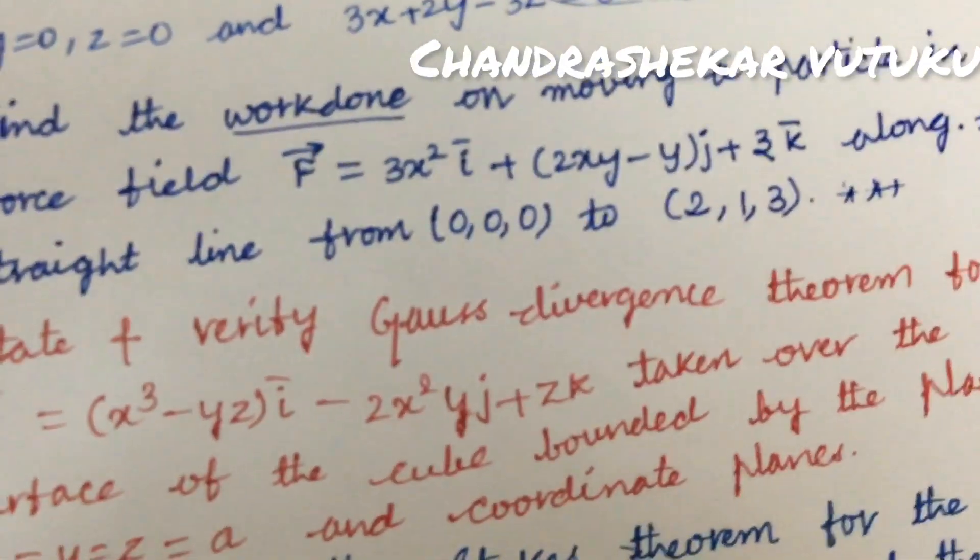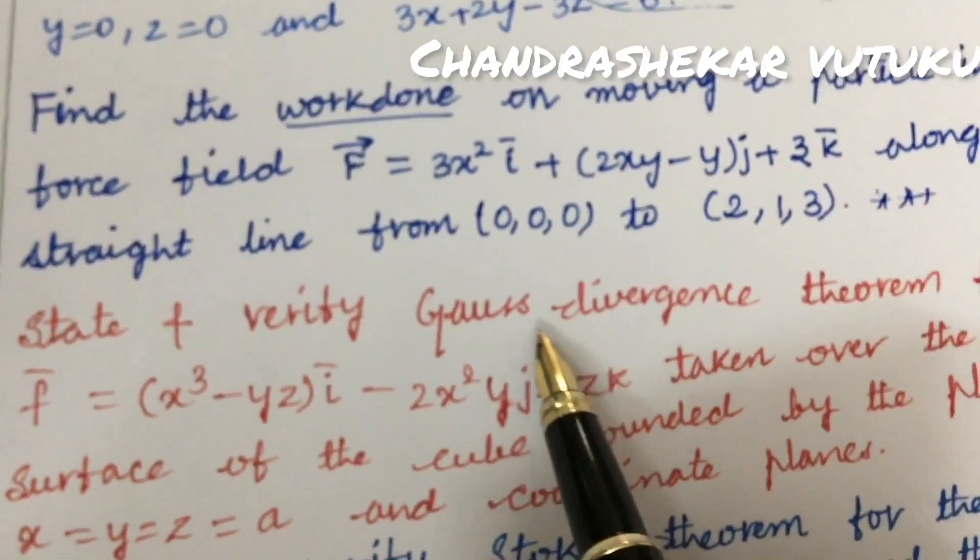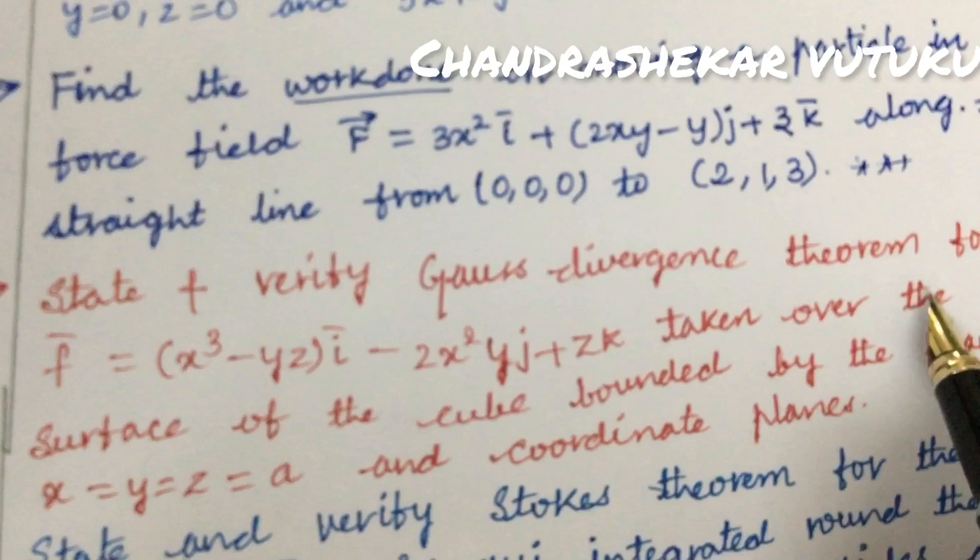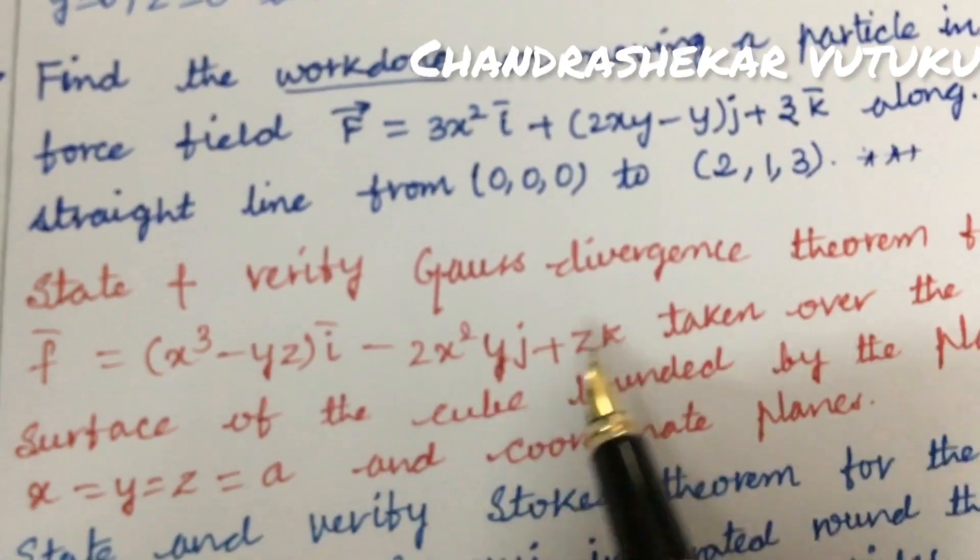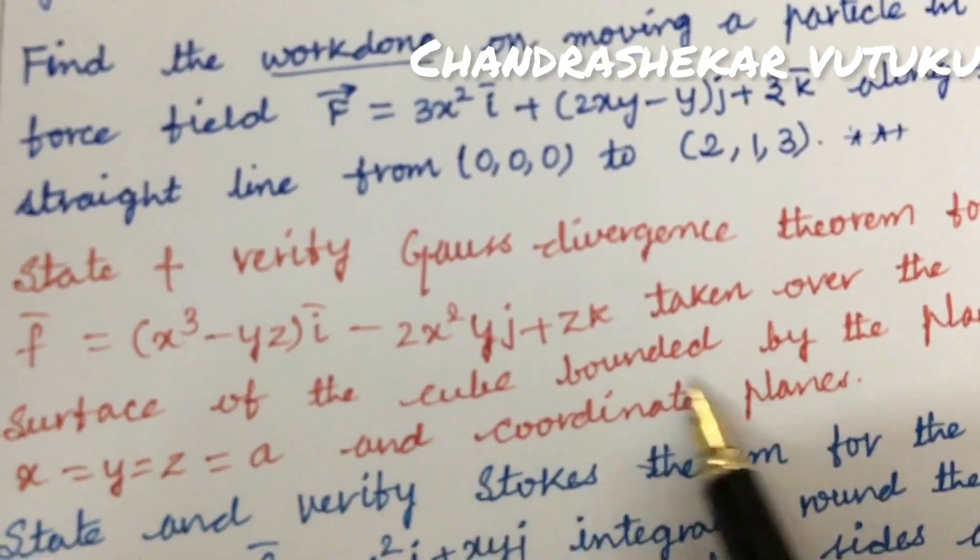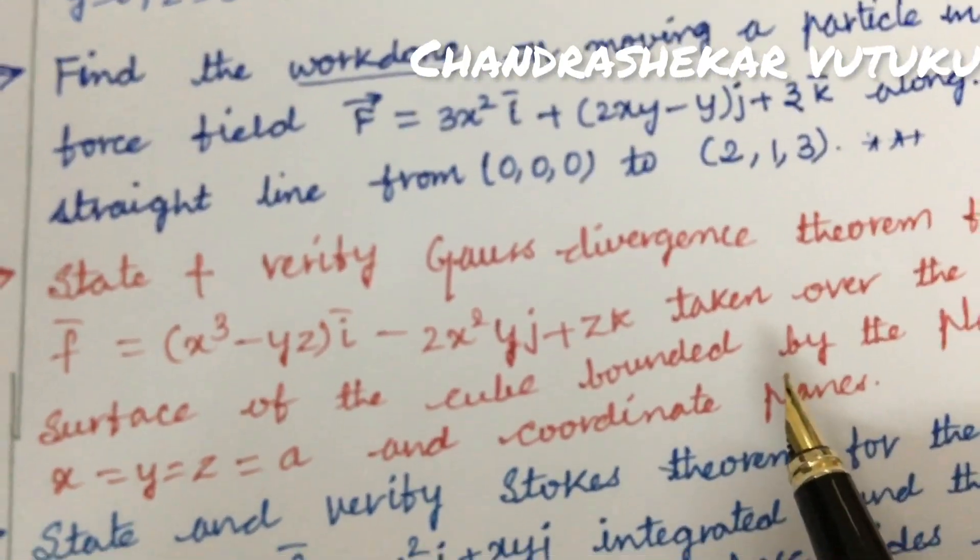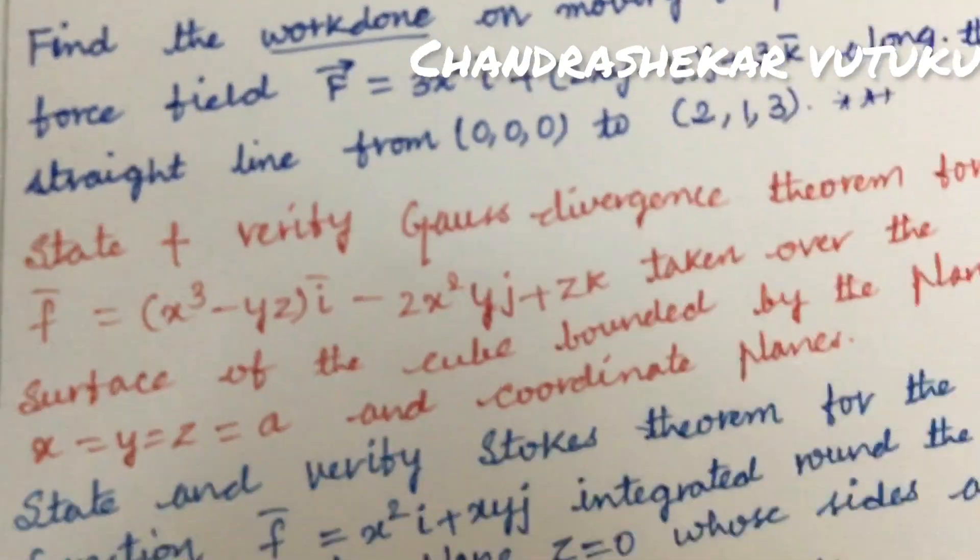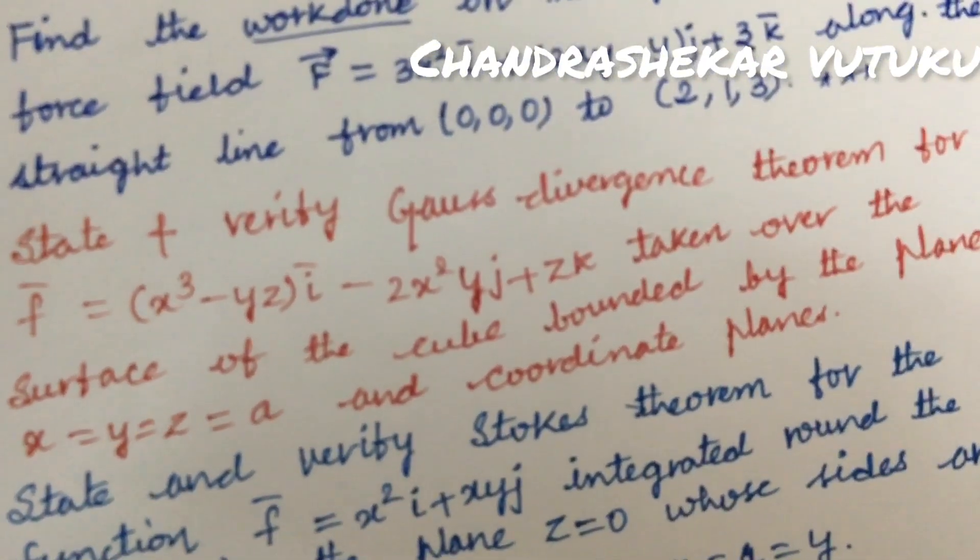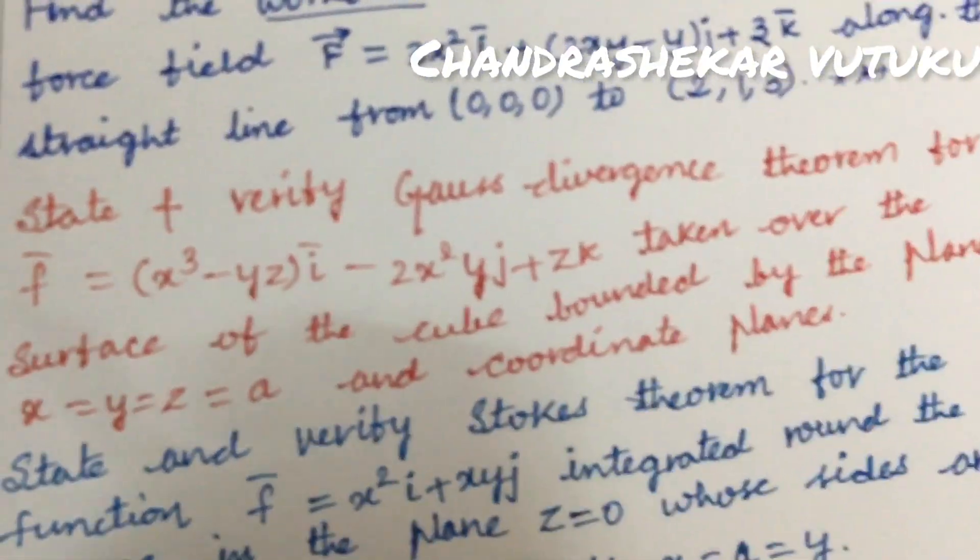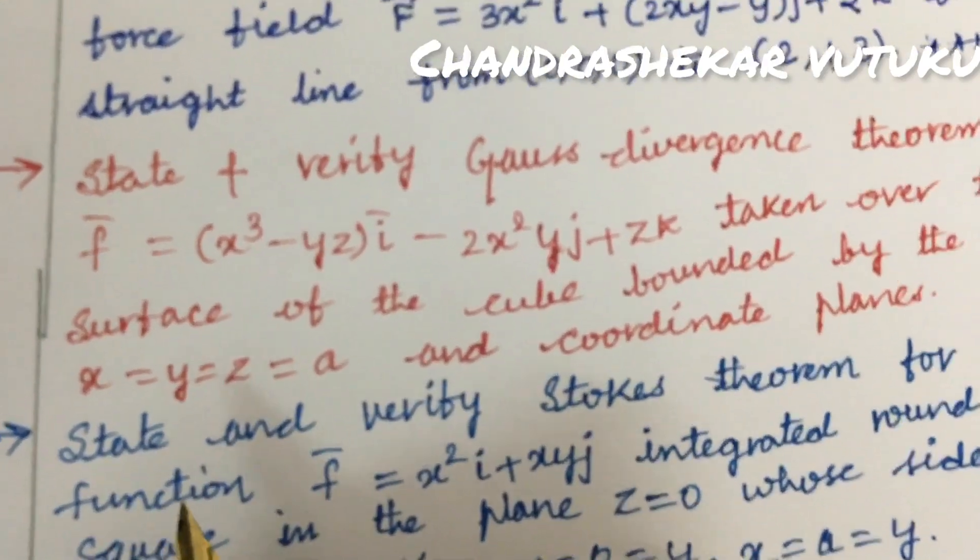Now I'm going to let you know two more important questions from Unit 5. State and verify Gauss's divergence theorem. Work out for the surface of the cube bounded or cylinder bounded. I've taken only a few questions related to these concepts - you should work out various problems as I'm giving only concept-oriented questions.